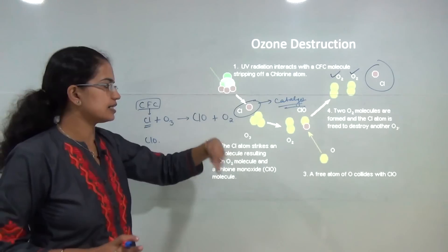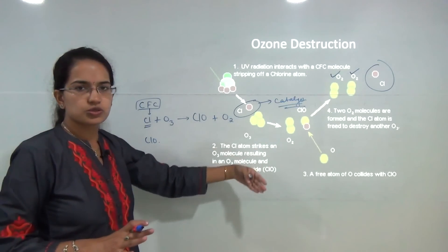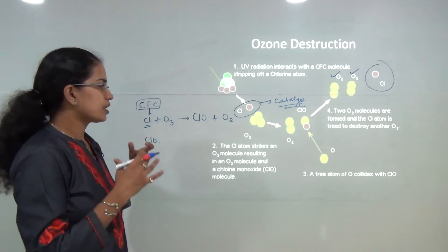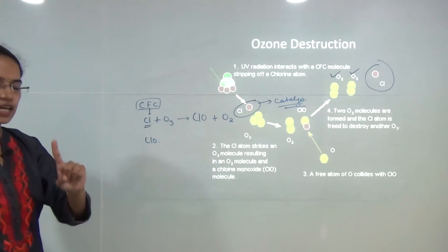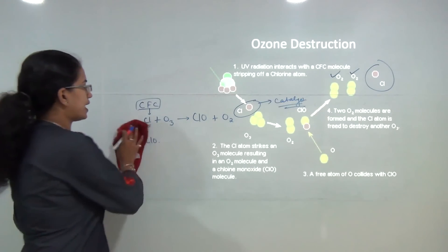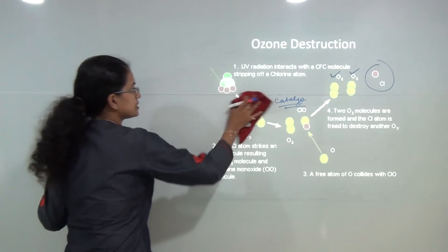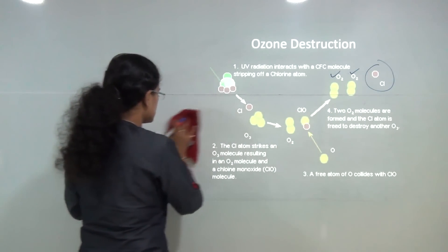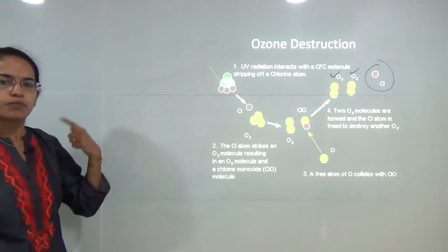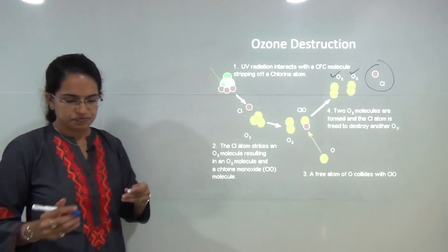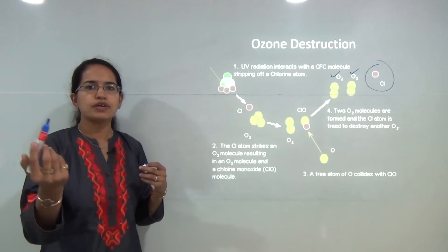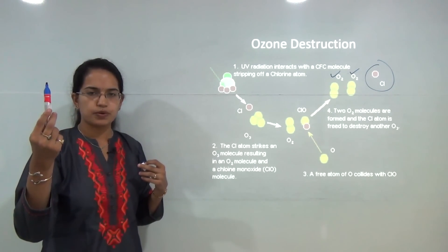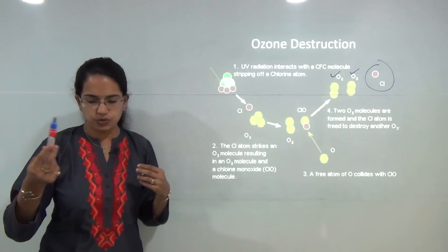This chlorine continuously reacts with ozone, leading to the breakdown of the ozone layer. The second question is why this takes place mainly in polar regions. There is a vortex of winds that moves up at the poles.